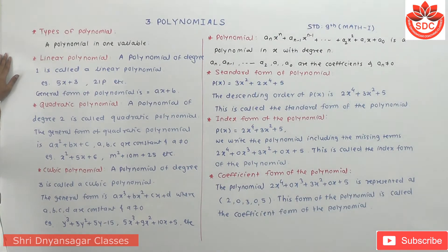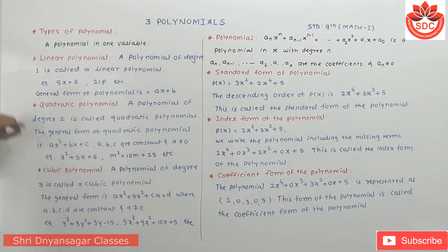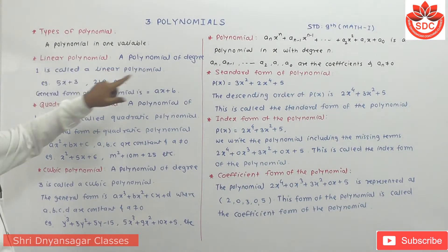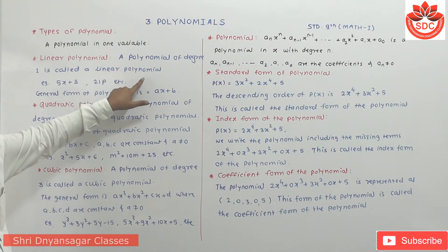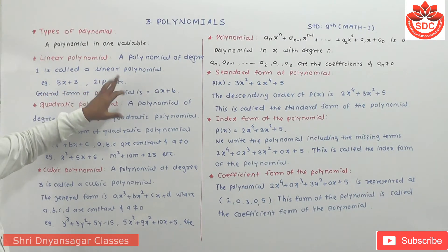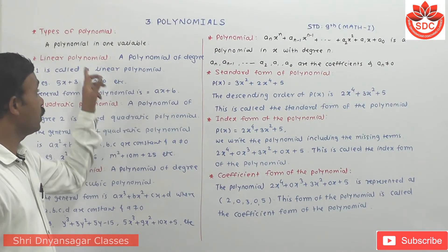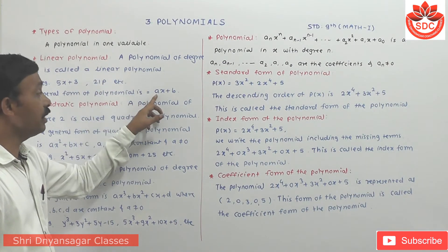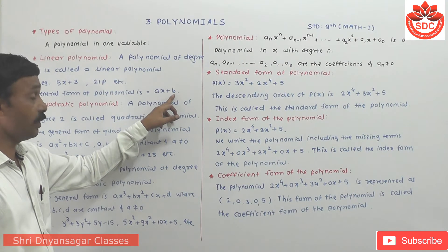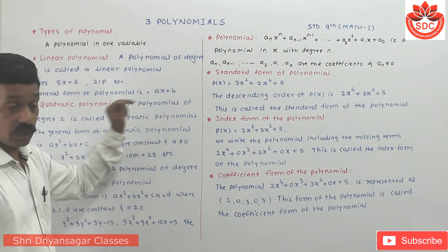Types of polynomial: if the polynomial is in one variable, there are 3 types — linear polynomial, quadratic polynomial, and cubic polynomial. A polynomial of degree 1 is called as the linear polynomial. For example: 5x plus 3, 21p, etc. The general form is ax + d, where a and d are constants and a ≠ 0.